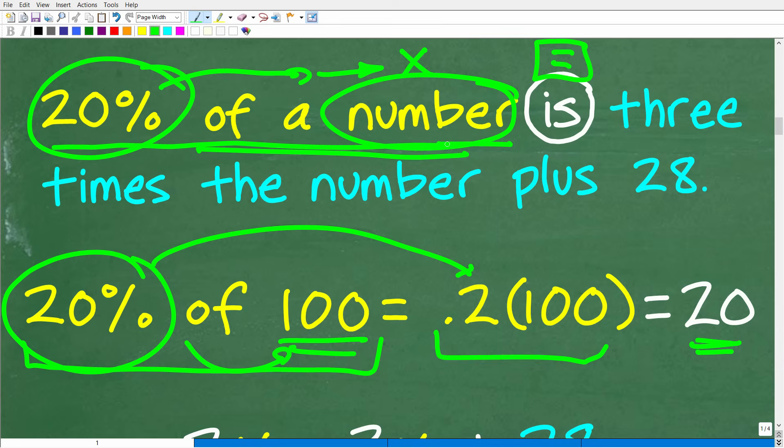So that's going to be the translation for this part of the problem. Now, the second part of the problem is three times the number. That's going to be three times X plus 28. So hopefully this is all making sense. And now let's put it all together.